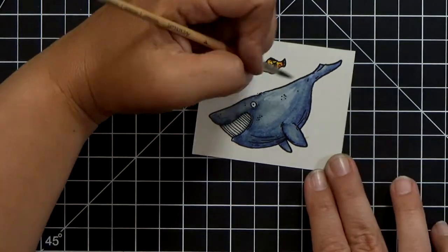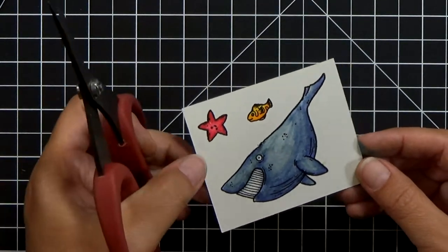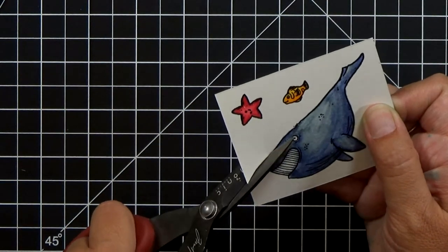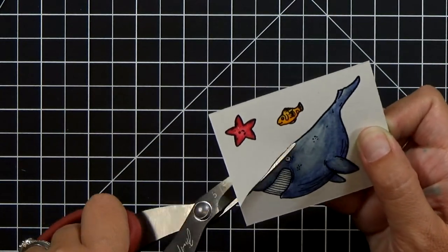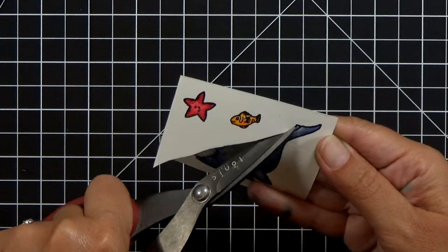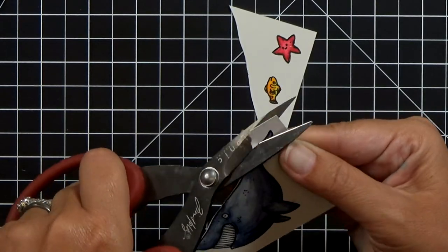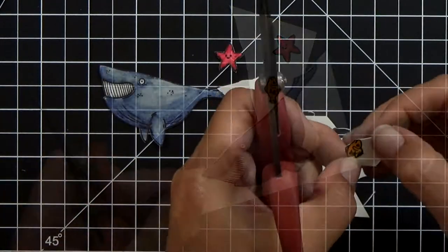I did use a little bit of water to blend some of the gray on his teeth and his eye just so that there's a little more depth and dimension and I also lifted a little bit of color on the top highlight part of him.